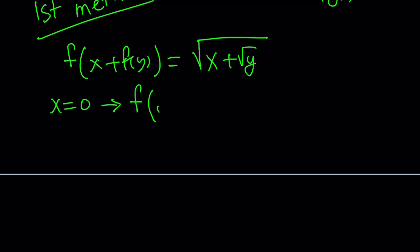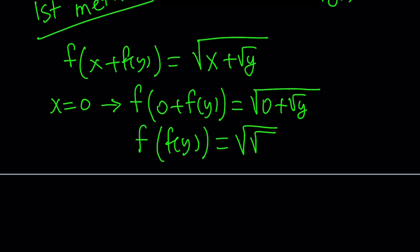f of 0 plus f of y equals square root of 0 plus square root of y. If you simplify this a little bit, you're going to get the following: f of f of y equals the square root of the square root of y. You can also write it as the fourth root of y. It's totally up to you if you want to do that. That's fine, but I'm going to leave it like this for now.